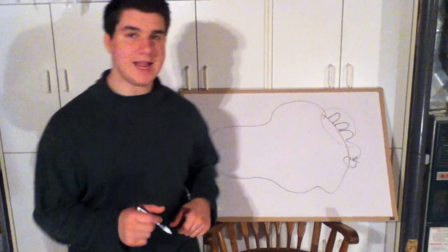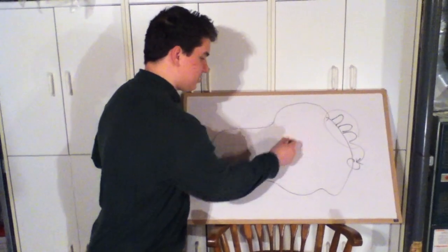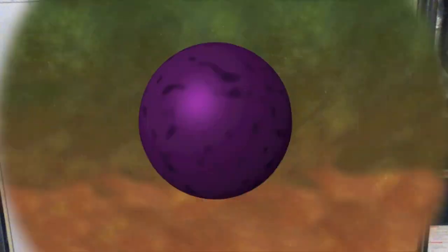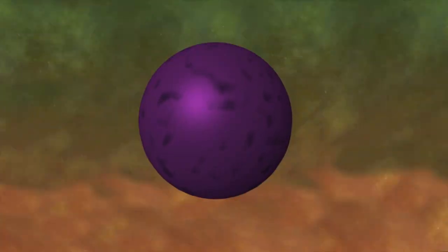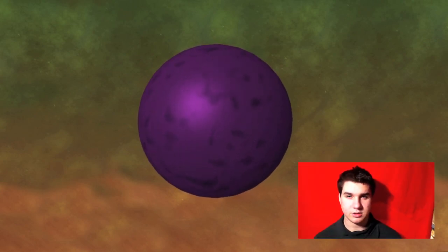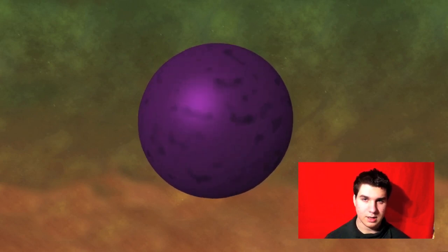Our next stop is the cell's control center: the nucleus. The nucleus is the control center of the cell, which houses the DNA, RNA, and chromosomes.